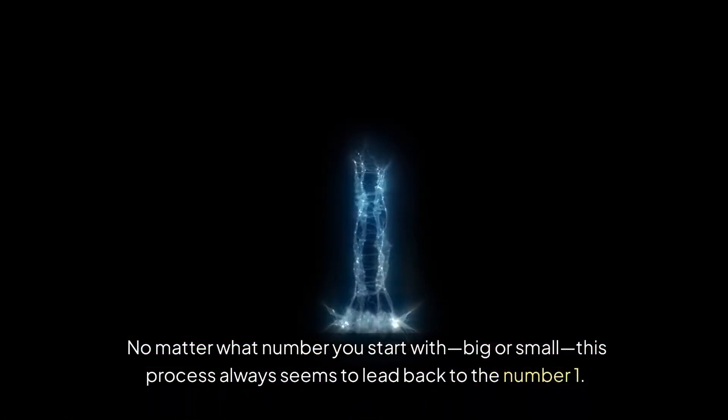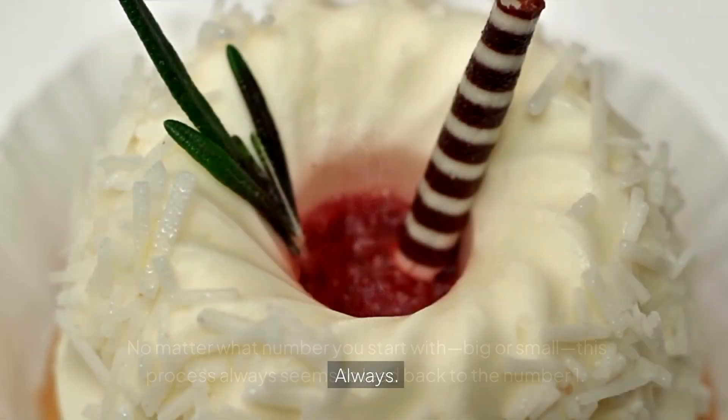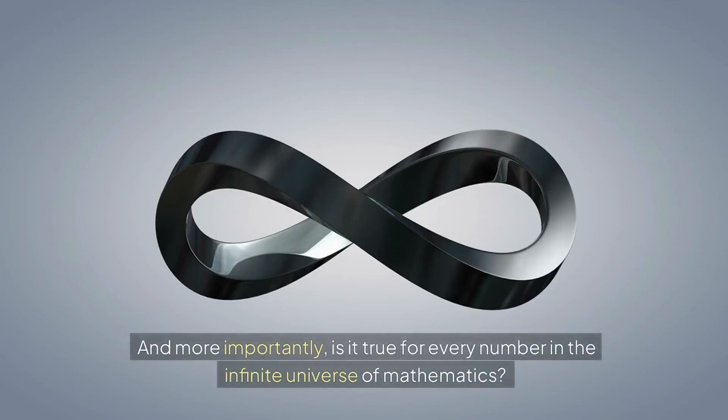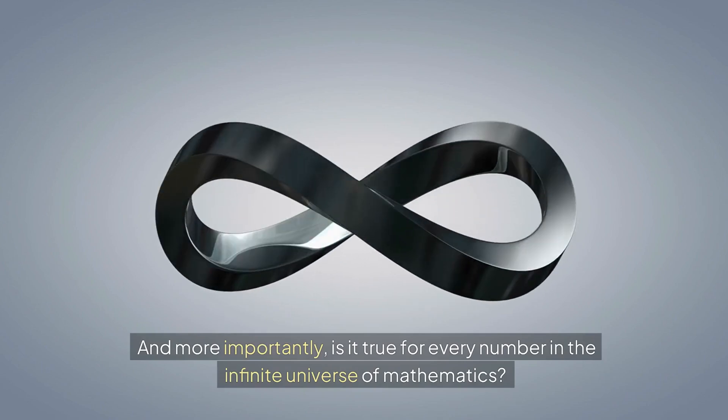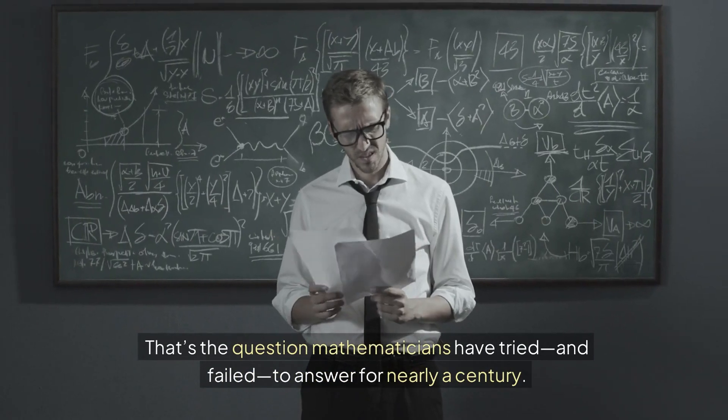But here's where the mystery begins. No matter what number you start with, big or small, this process always seems to lead back to the number one. Always. But why? And more importantly, is it true for every number in the infinite universe of mathematics?